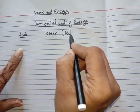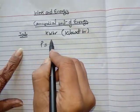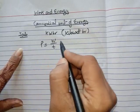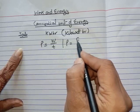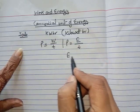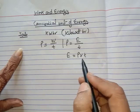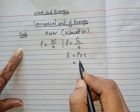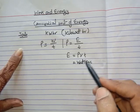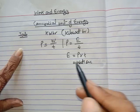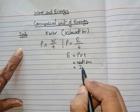You know power is equal to work done upon time. For commercial purposes we can also say power is equal to energy consumed upon time, which means energy consumed equals power multiplied by time. According to this formula, the SI unit of energy should be watt into second. This watt-second is actually equal to the joule.